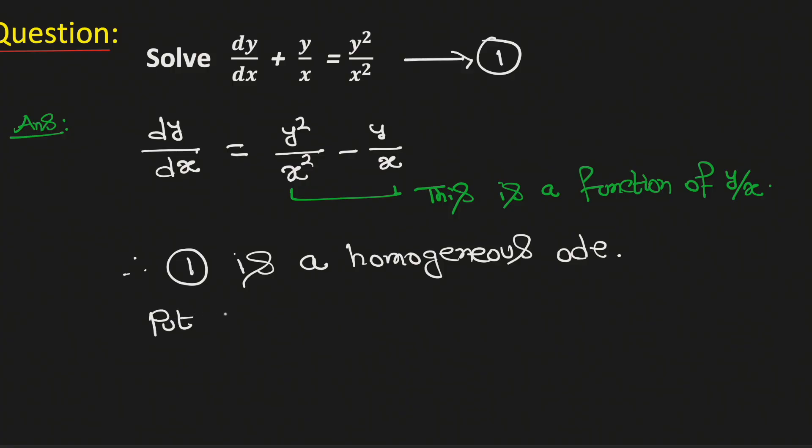We will put y/x equals v, that is y equals vx. Differentiating both sides with respect to x we get that dy/dx equals v plus x dv/dx.